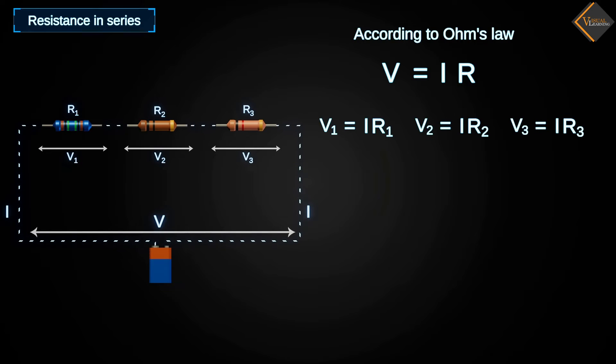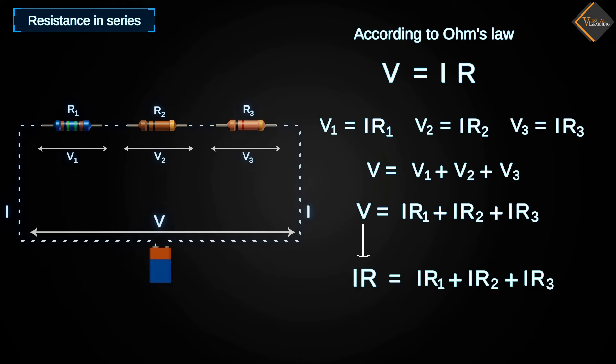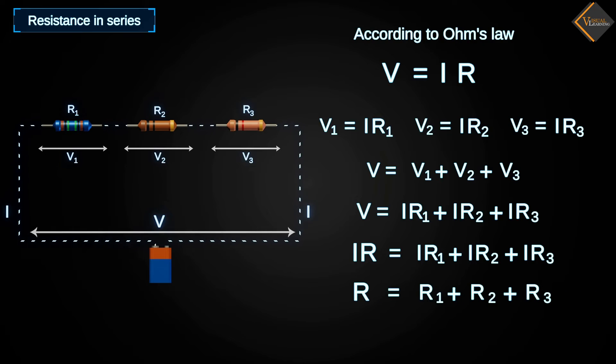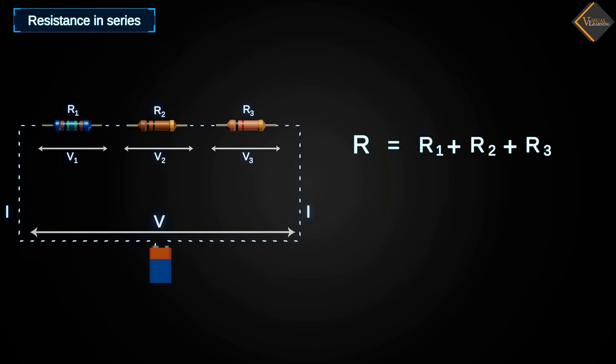Now, if we sum up these three potentials, we get an equation where current is common. In this equation, we will replace V with IR. And by cancelling out I on both sides, we finally get an equation that gives us the total resistance in a series connection.